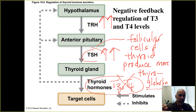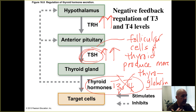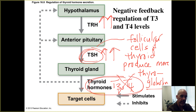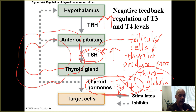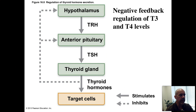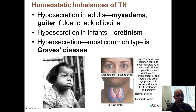TSH tells the follicular cells in your thyroid to produce more thyroglobulin — that's the glycoprotein precursor, the immature form of T3 and T4 stored in the follicles. TSH keeps signaling those follicular cells to keep making more, but you never get fully mature T3 and T4 because there's no iodine. The thyroid gland just gets bigger and bigger — that's a goiter. Goiters can also be associated with hypersecretion as well.